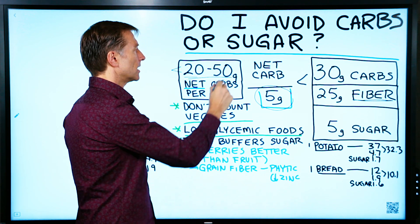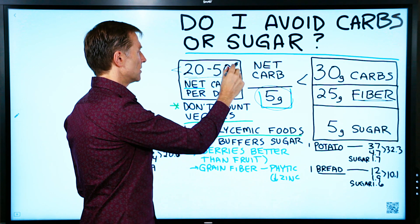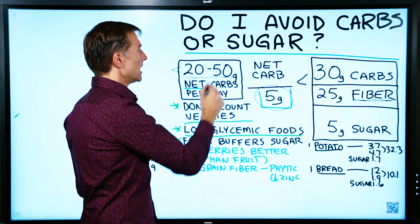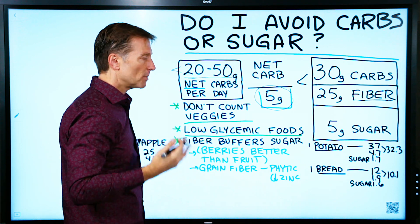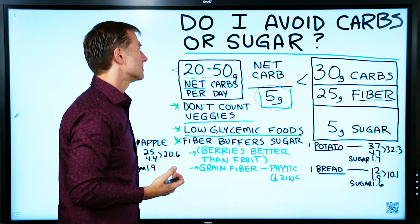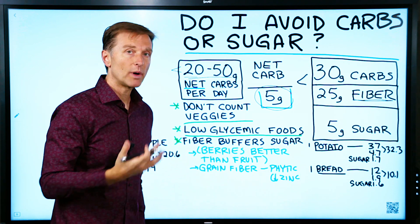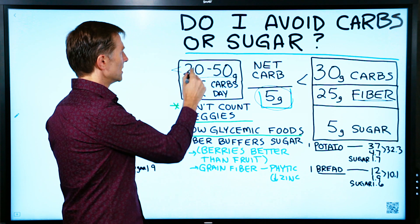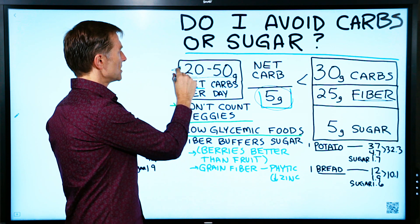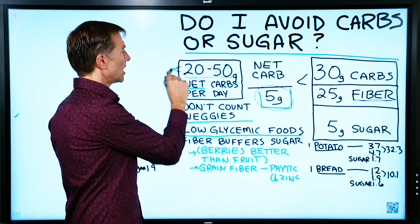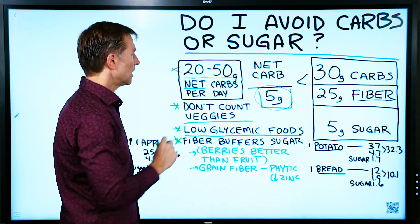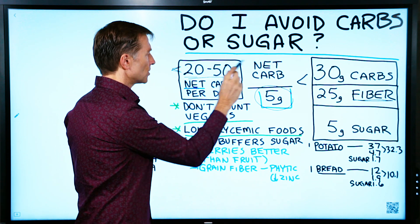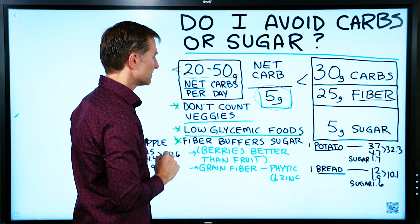With keto, you don't want to go above 50 grams of net carbs. We're always focusing on net carbs between 20 and 50 grams or less. If you have a slow metabolism and want to lose more weight, cut the carbs even more. We're operating off of net carbs, not total carbs.